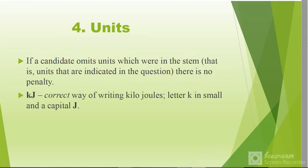If a candidate omits units which were in the stem - that is, units that are indicated in the question - there is no penalty. But if the student does not write the units that were not there in the question, then there is a penalty and the mark is gone. A unit like kilojoules: the correct way of writing kilojoules is letter k should be small and J capital. If you don't write it that way, that one is penalized.